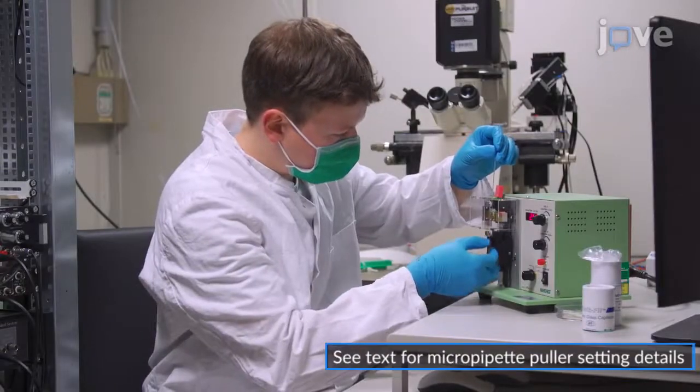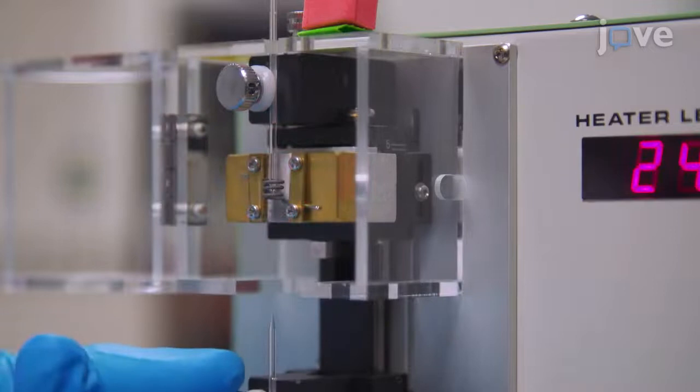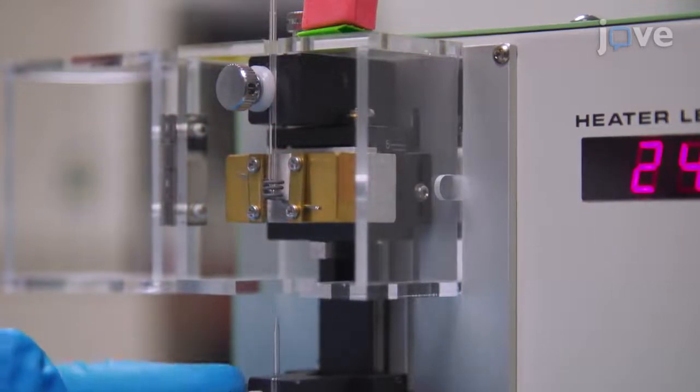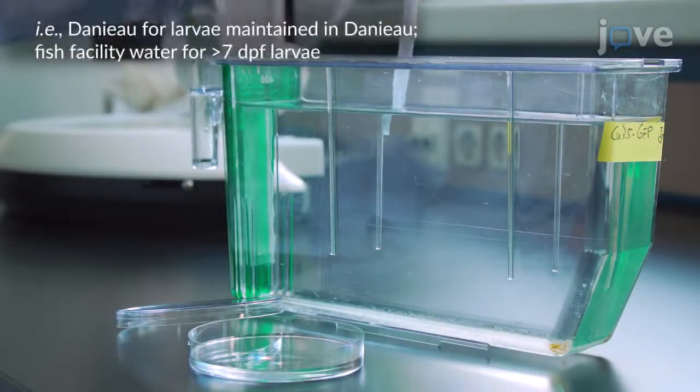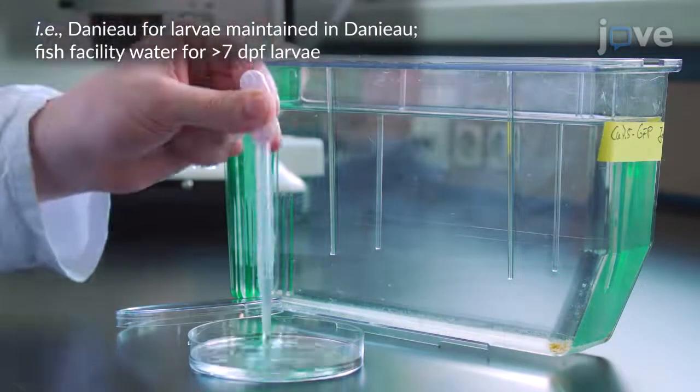Before beginning the experiment, use a micropipette puller to prepare sharp thin glass needles from glass capillaries. Next, use a plastic pasteur pipette to collect larvae into a 90mm diameter petri dish containing the appropriate solution.